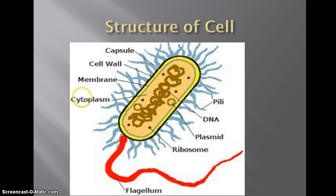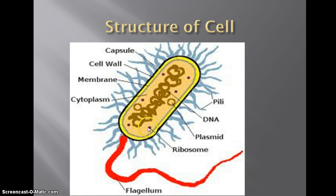Moving on in, we have the cytoplasm. This looks almost like a tan or beige color here. Basically, this is mostly made of water, and it holds all the internal structures — like your ribosomes, like the plasmid, like the chromosome. All those internal structures are held within the cytoplasm.